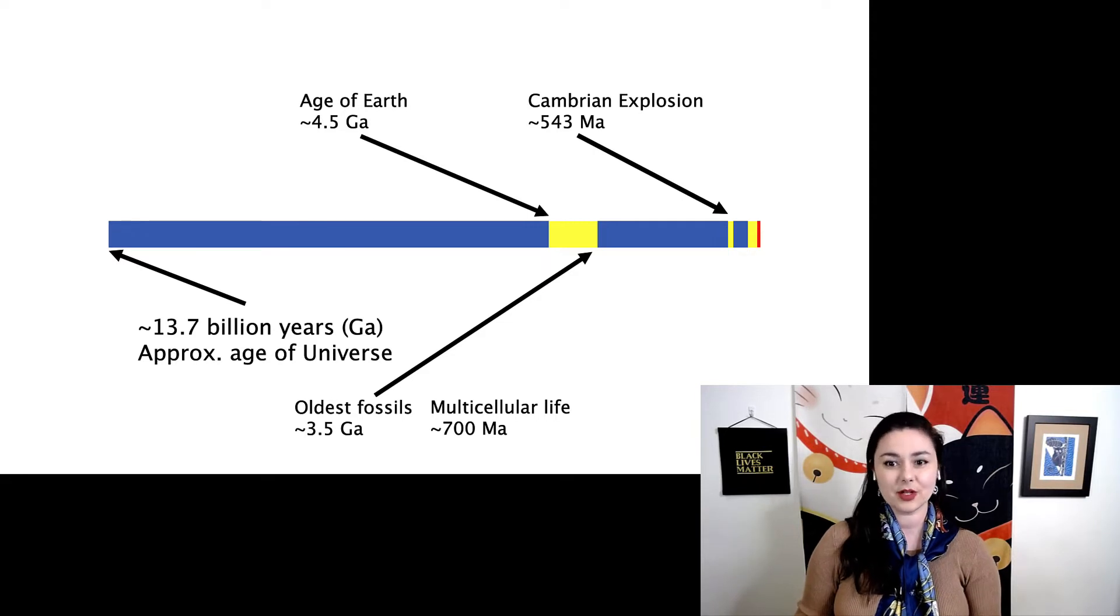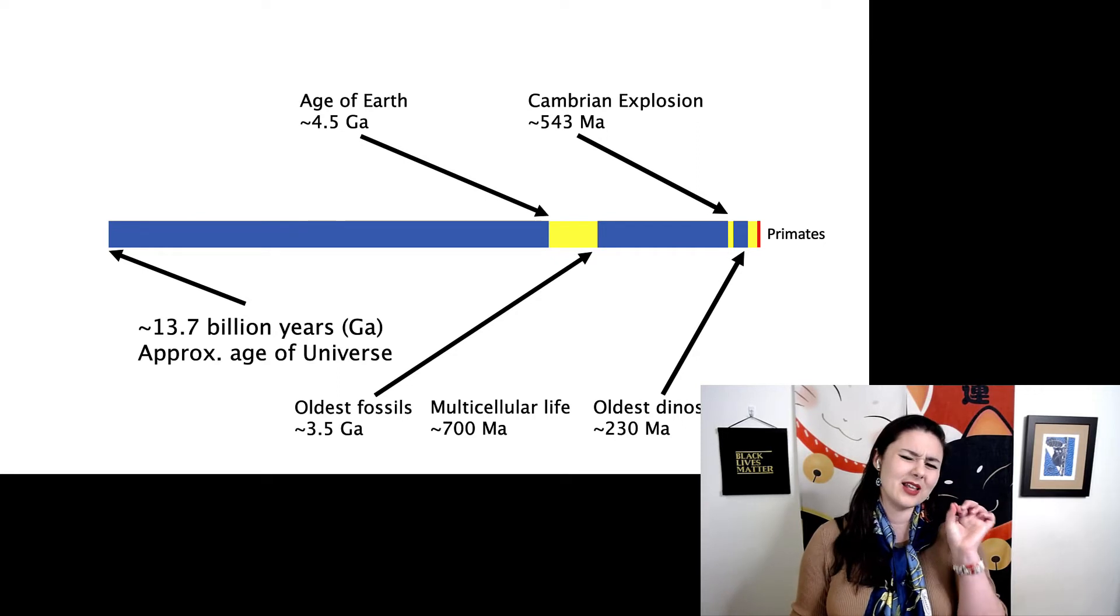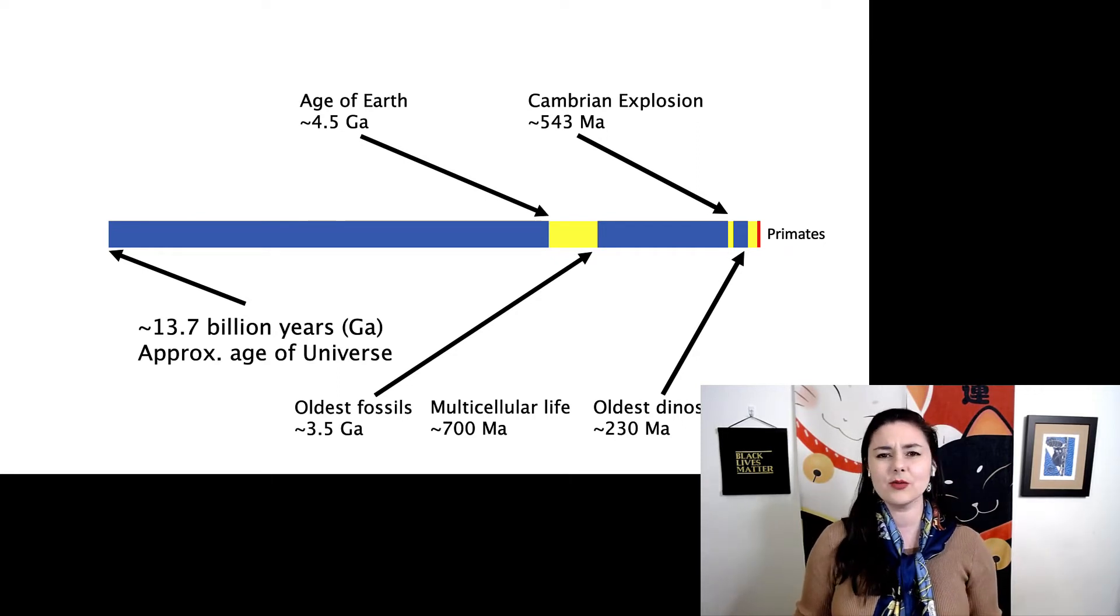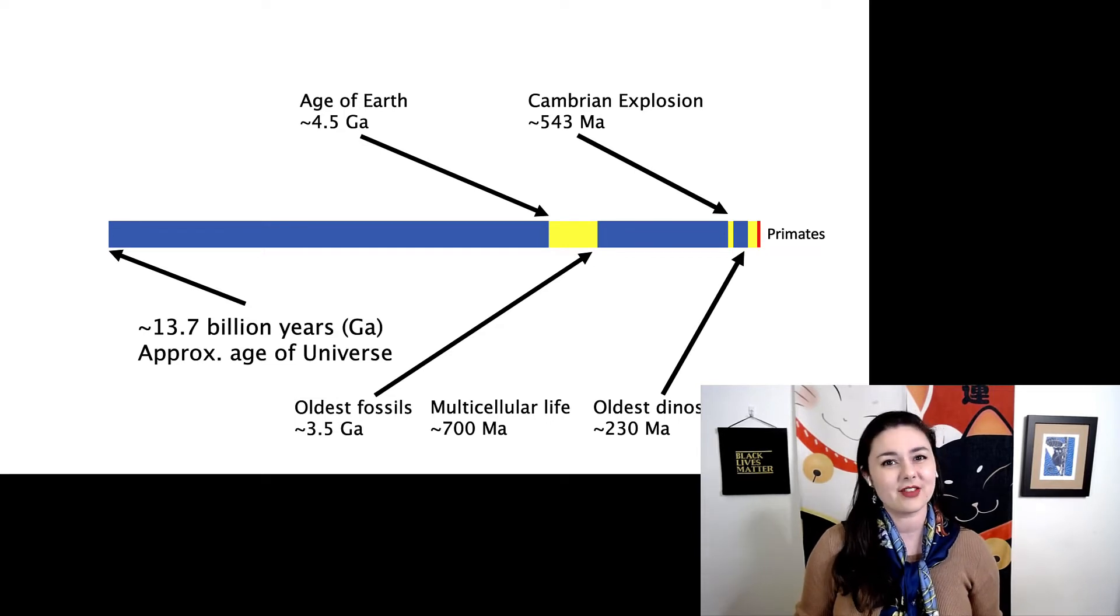We have the Cambrian explosion at about 543 million years ago. The oldest dinosaurs are 230 million years ago, and primates are just right there, very recent, everything considered. So most of the time when we're looking at the fossil record, it's just a tiny slice of all time and a tiny slice of all of the life that's ever lived on Earth.